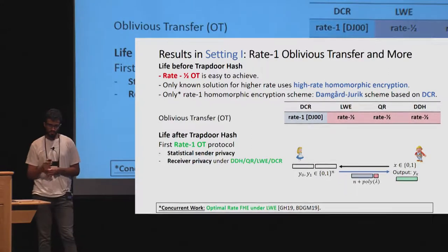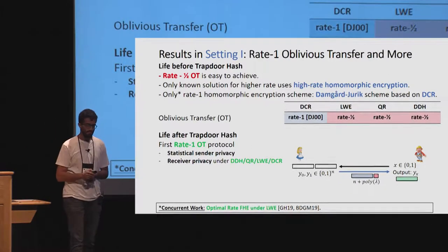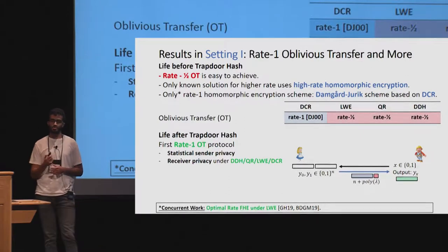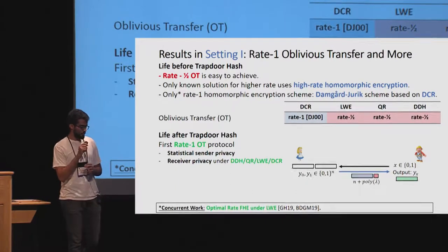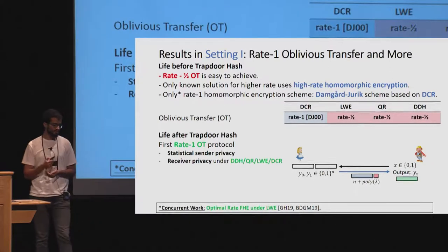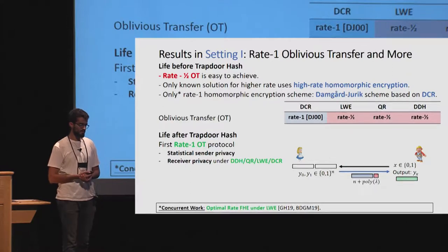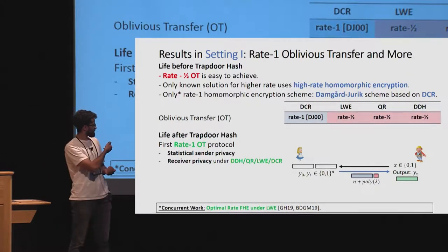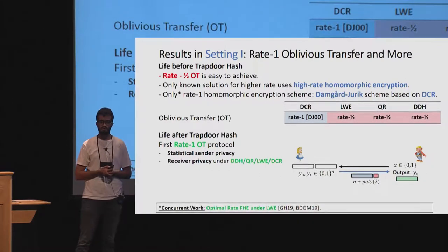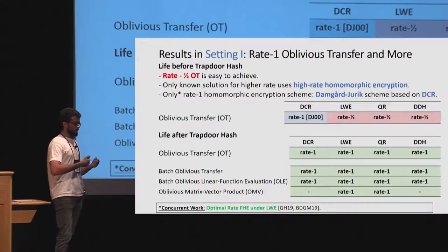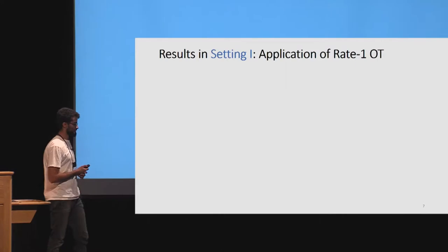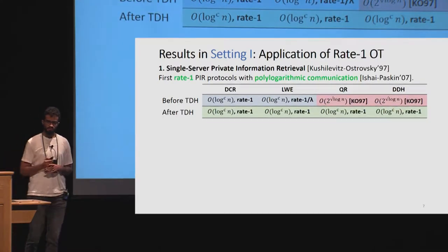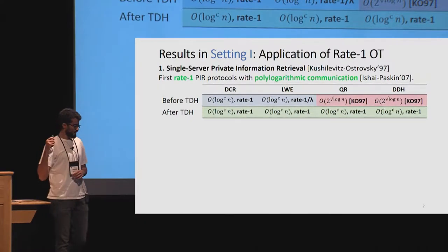Using trapdoor hash, we get the first optimal-rate oblivious transfer protocols under the DDH, QR, and LWE assumptions, and a new construction from DCR with nicer properties compared to Damgård-Jurik. More specifically, we get statistical sender privacy and computational receiver privacy, and the sender sends n + poly(lambda) bits in the second message. We can further get protocols for more general functions such as batch OT, batch OLE, and matrix-vector product.